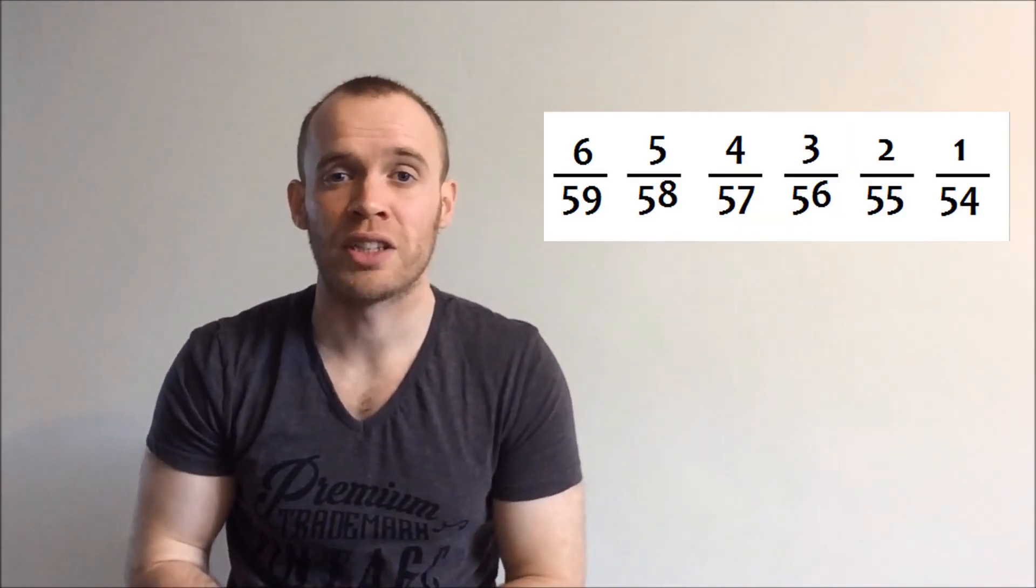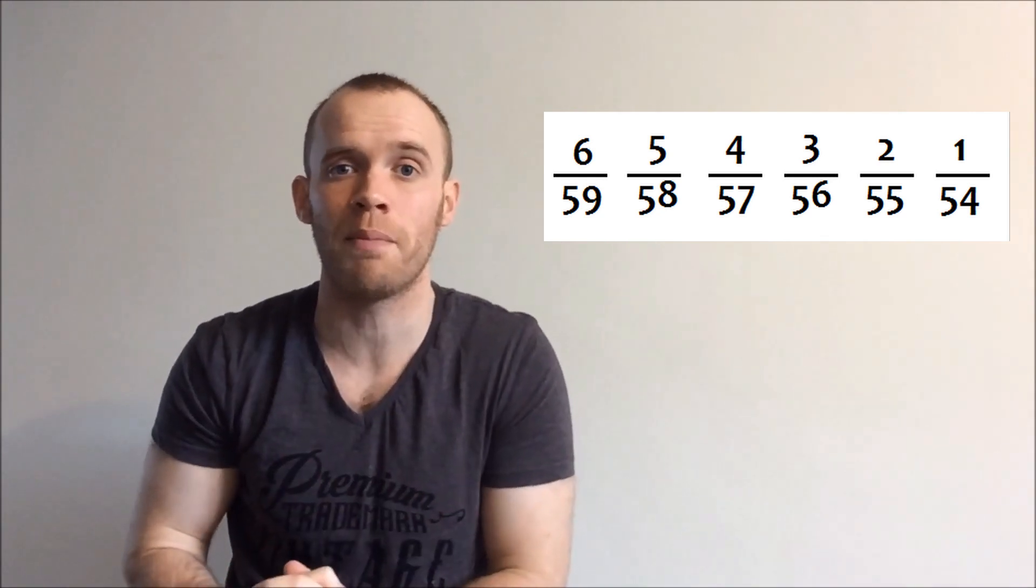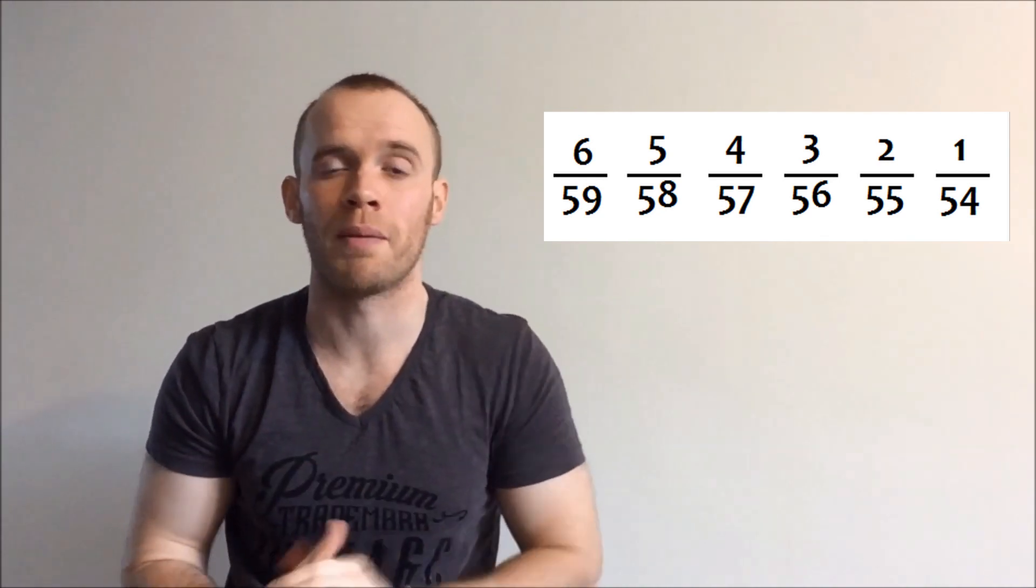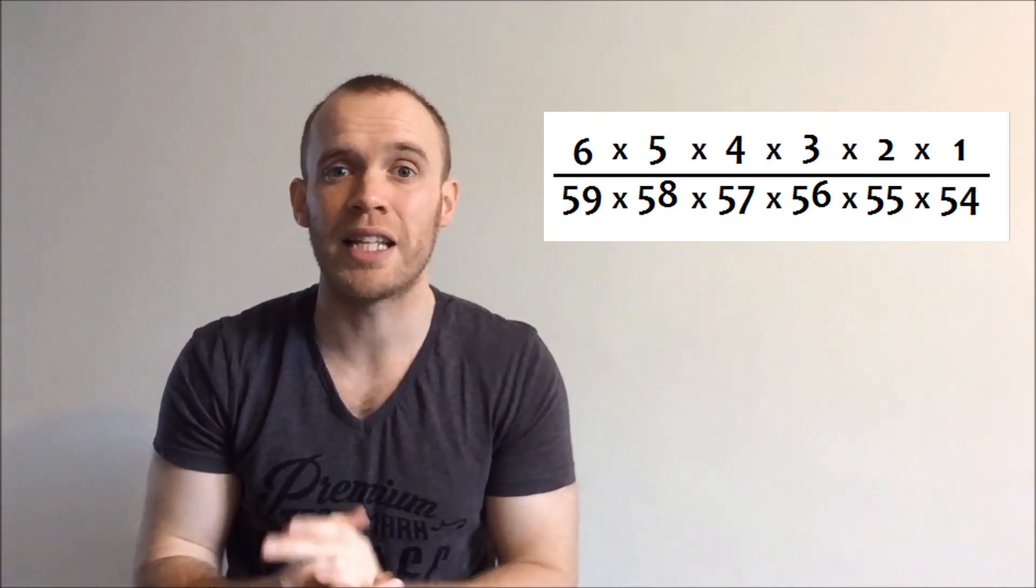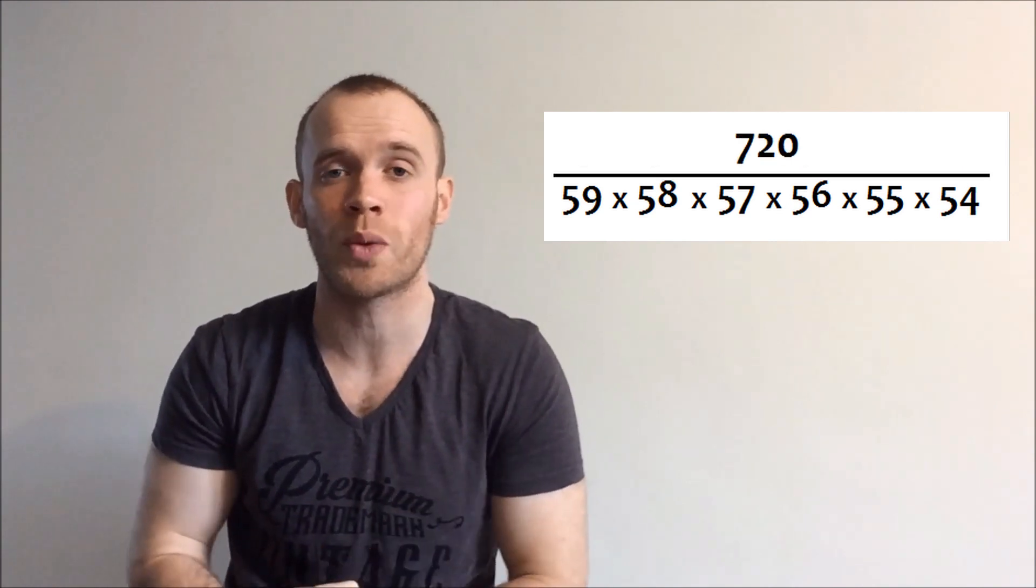What we have now are six fractions, but to find out the one fraction that represents your odds of matching all six numbers, you're going to need to multiply all the top numbers together, and all the bottom numbers. The top numbers are known as the numerators, one, two, three, four, five, and six. Multiply them together, you get 720.